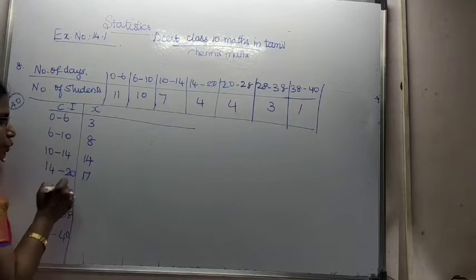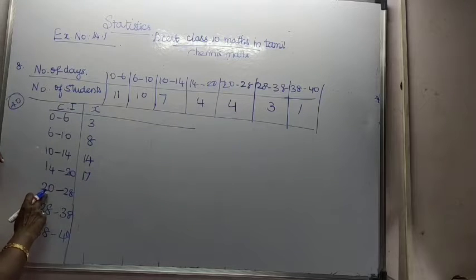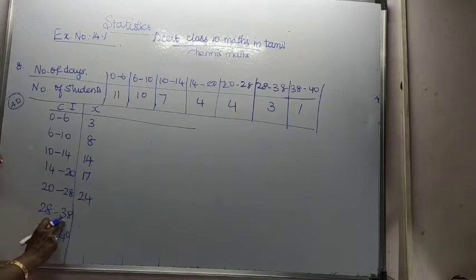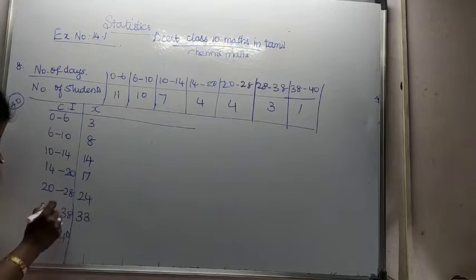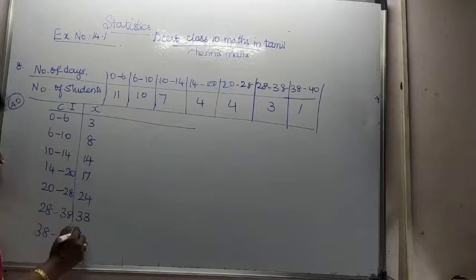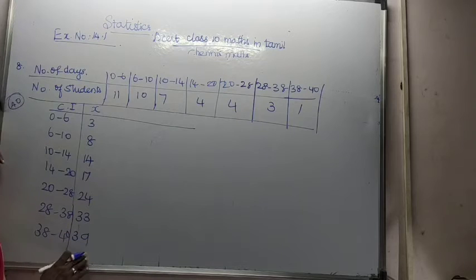20 plus 28 is 48, divided by 2 is 24. 28 plus 38 is 66, divided by 2 is 33. 38 plus 40 is 78, divided by 2 is 39.